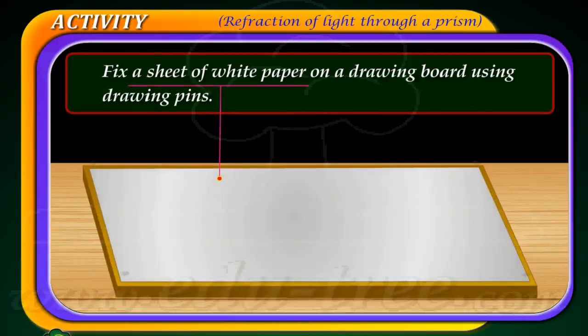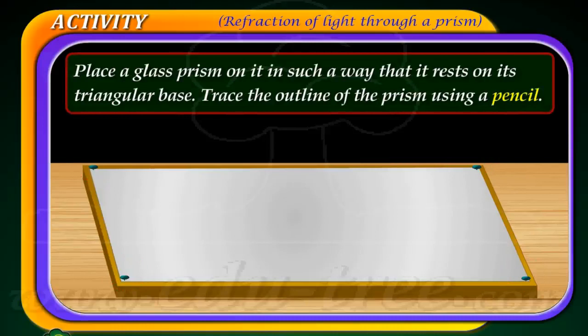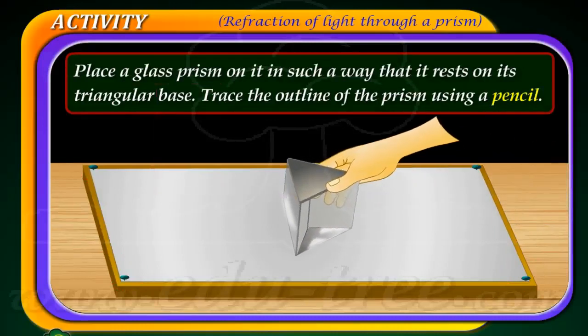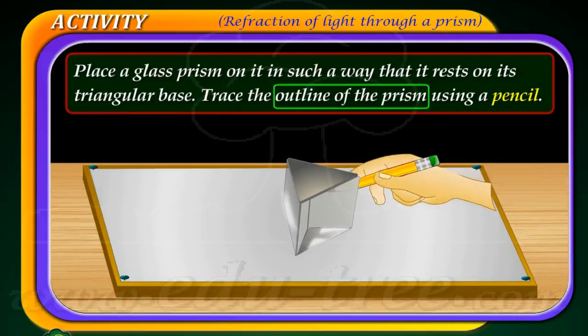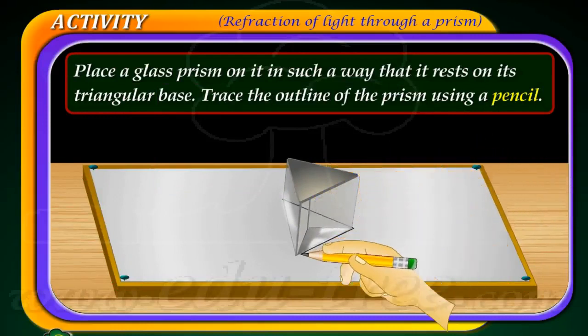Fix a sheet of white paper on a drawing board using drawing pins. Place the prism on its triangular base. Trace the outline of the prism using a pencil.